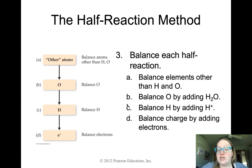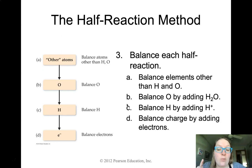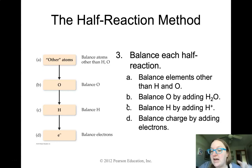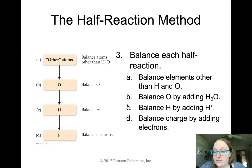Step three is to balance each half-reaction using a sub-procedure: first, balance elements that are not hydrogen and oxygen — for instance, balance manganese or zinc atoms on both sides before moving on. Second, balance the oxygens by adding water to whichever side needs it. Third, balance the hydrogen by adding H+ to the other side. Fourth, balance the charge on both sides — the sum of charges on both sides must be equal — by adding the appropriate number of electrons.